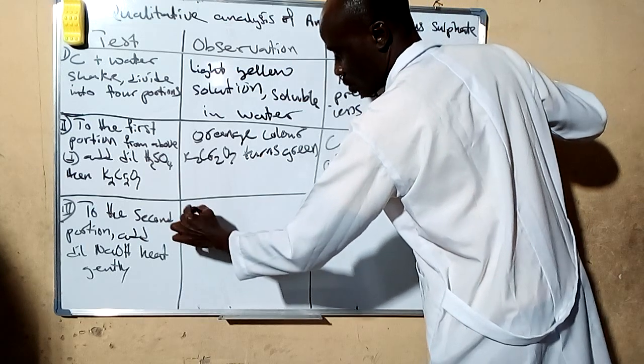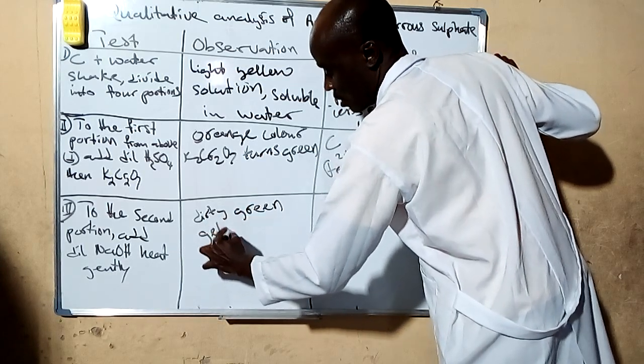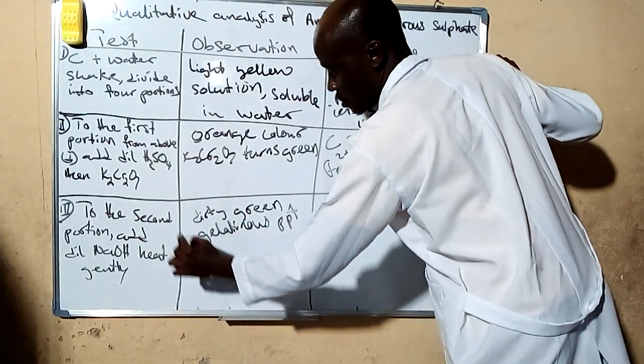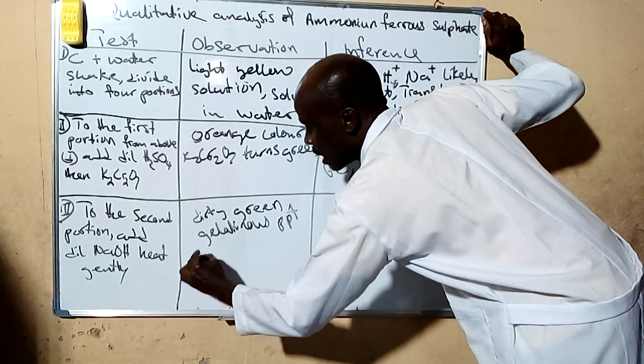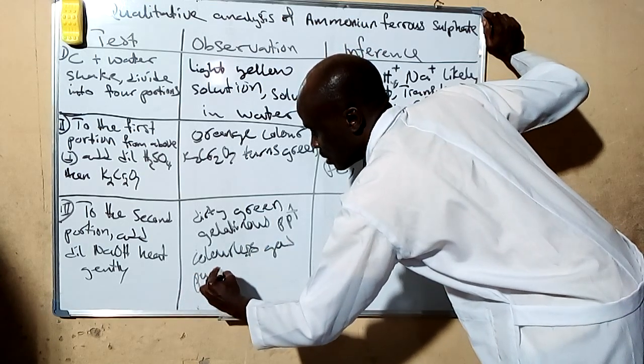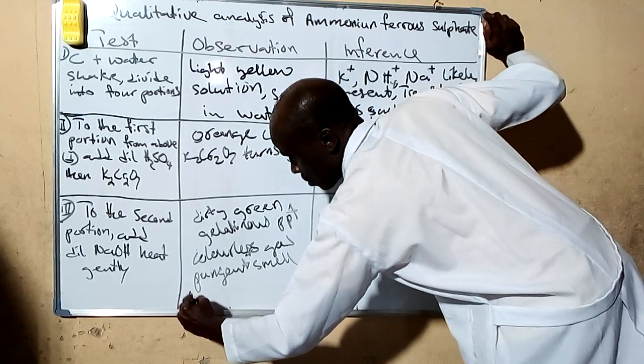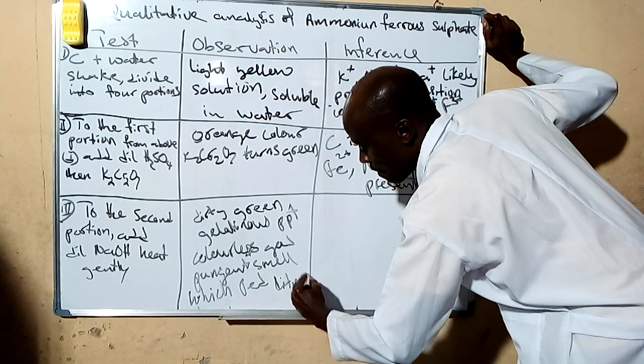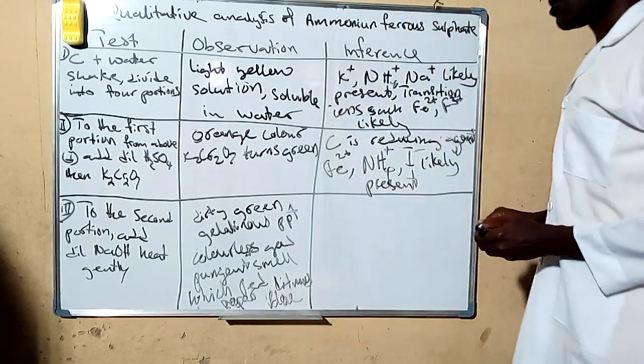When you add sodium hydroxide to it, the observation you're going to notice is dirty green gelatinous precipitate. And then when you warm, on warming you notice a colorless gas with pungent smell that turns red litmus paper blue.